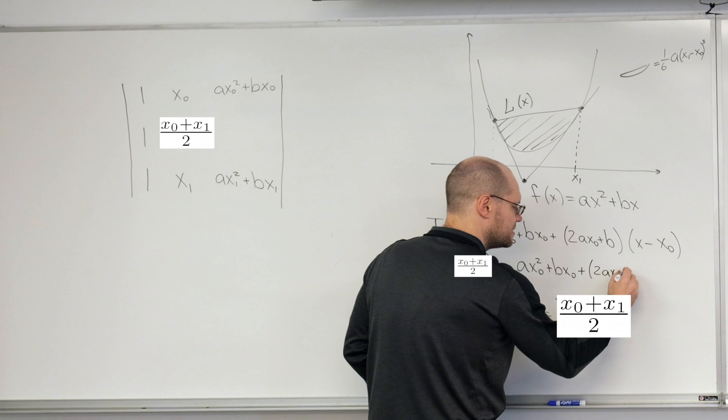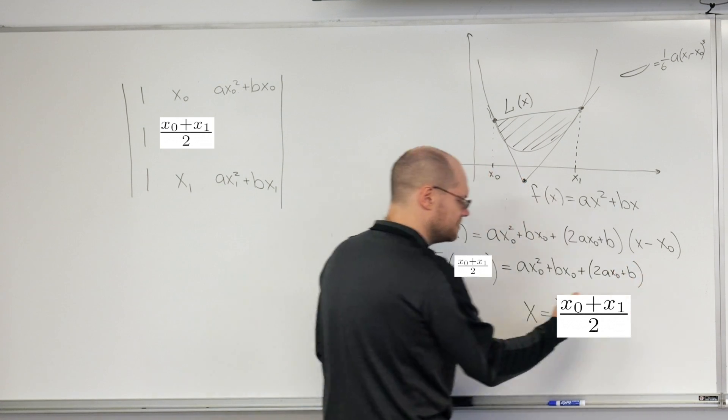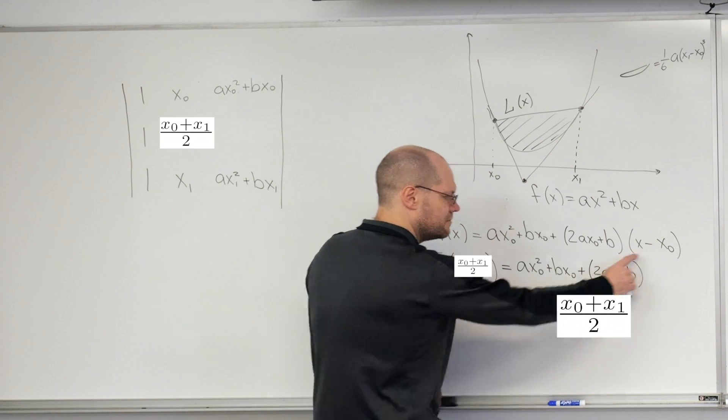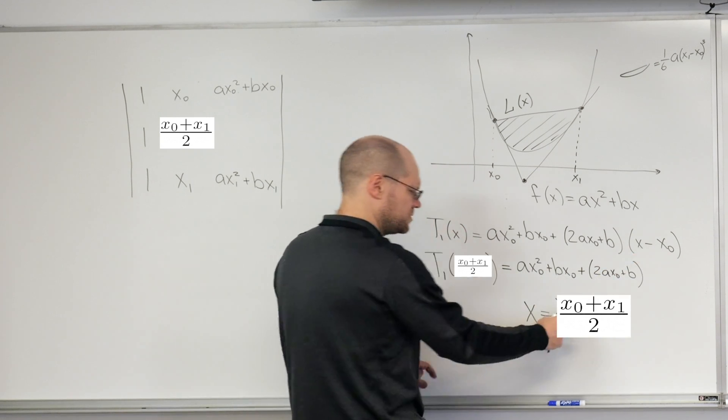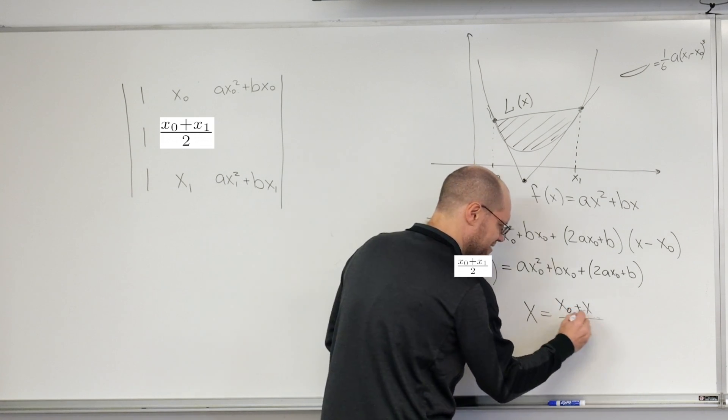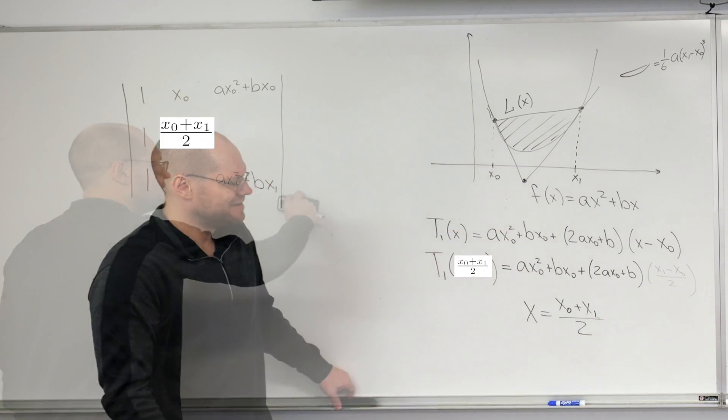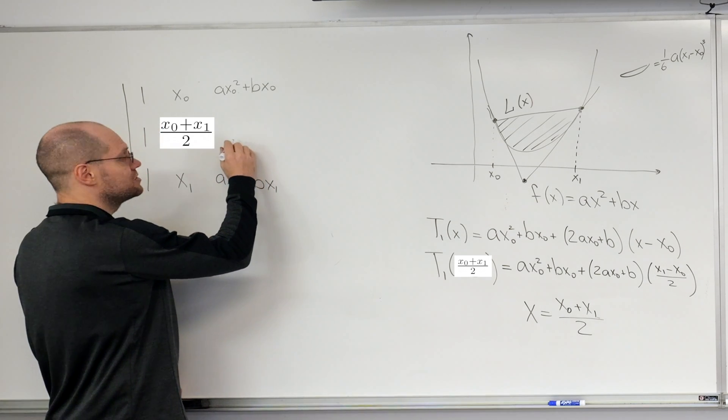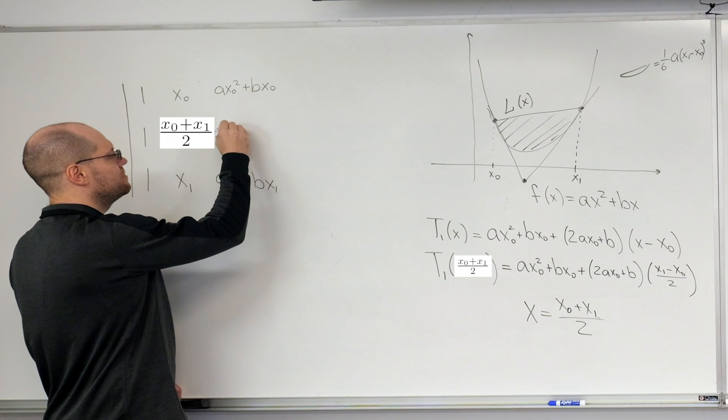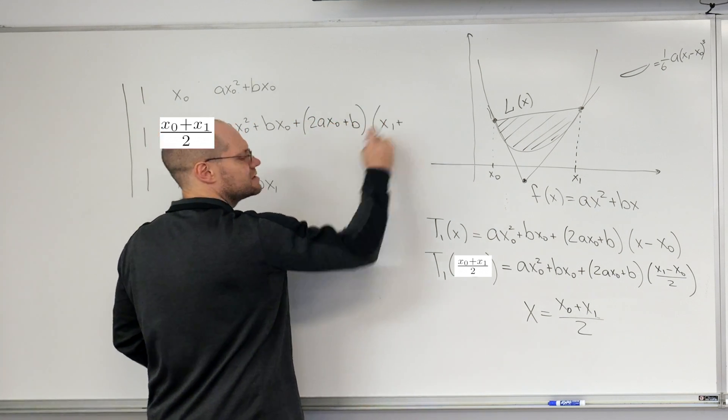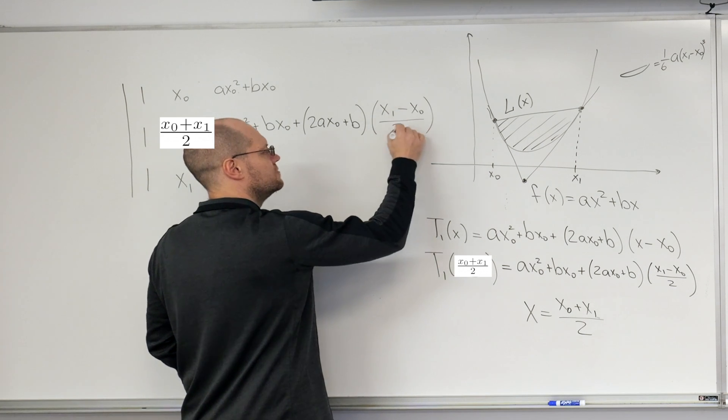So I just need to plug in this value into one of these, and I would get the same value. What we need is t1 at (x0 plus x1) over 2. That equals ax0 squared plus bx0, plus (2ax0 plus b) times ((x0 plus x1) over 2 minus x0). But I have a plan, because I also love linear algebra.